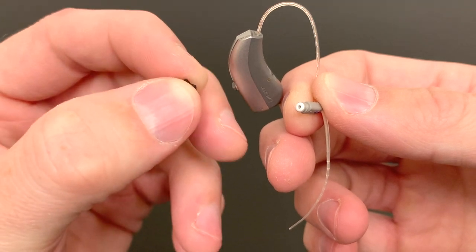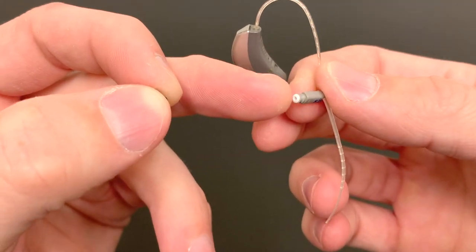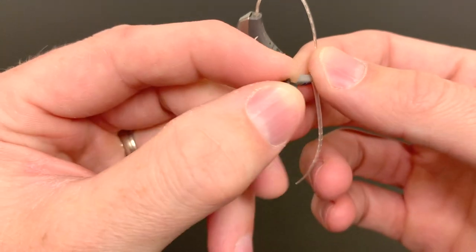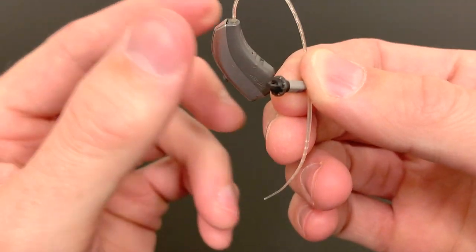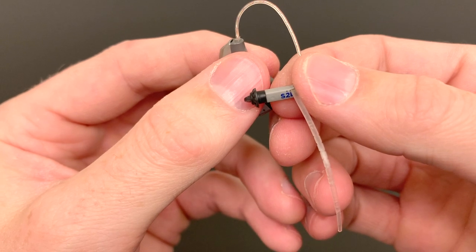So again, let's review the parts of the hearing aid one more time. This white piece here is called the wax guard. The rubber tip that goes on the end can be called a tip or a dome, and they come in various shapes and sizes.